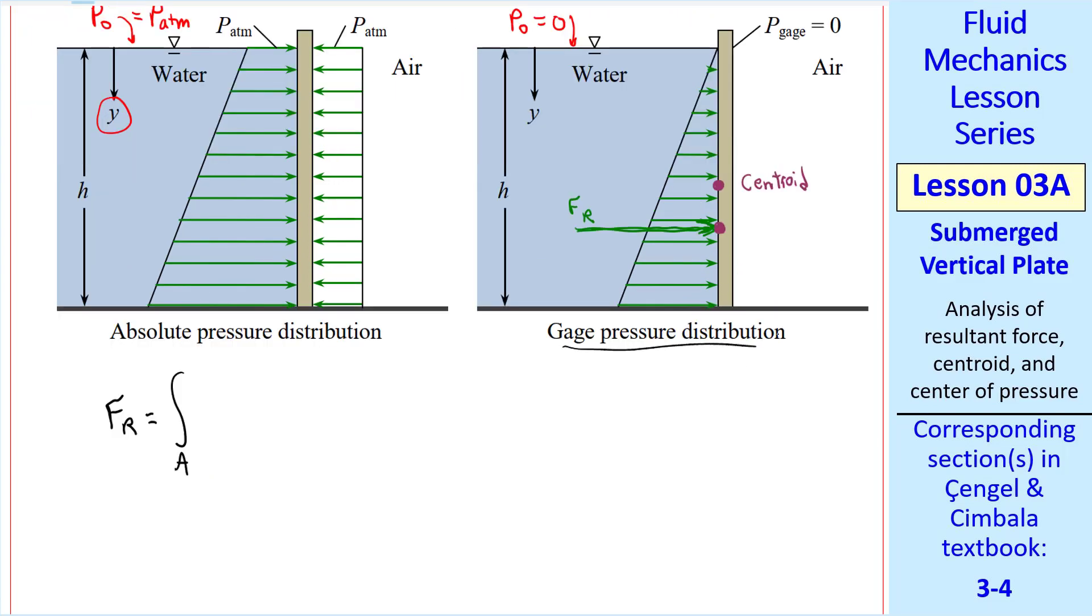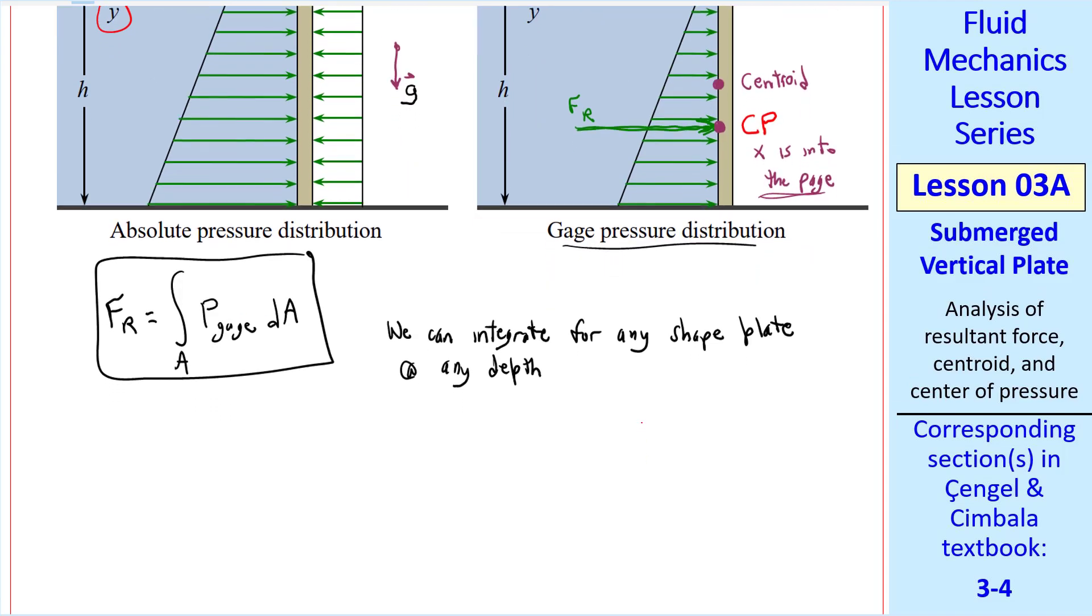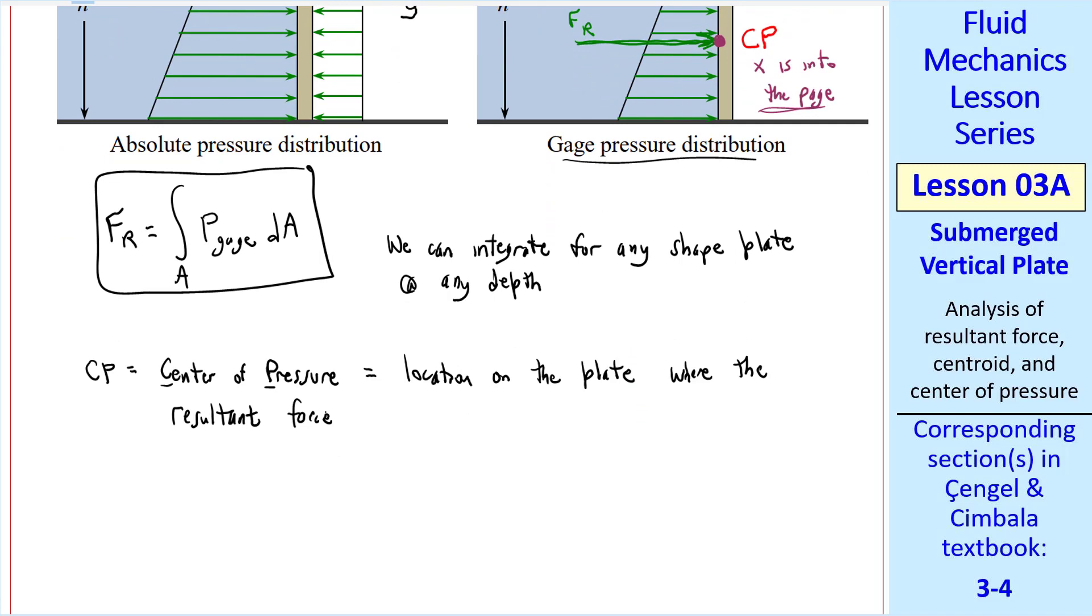Mathematically, using gauge pressure, the resultant force is the integral over the wetted portion of this plate, which we call A, of P gauge dA. We can integrate for any shape plate at any depth. You would just integrate P gauge, which varies with area on the plate, over this whole area. I also want to point out that we'll let the x-axis be into the page in these kinds of problems. This point where the resultant force acts, we'll call the center of pressure, or CP. CP is the center of pressure, which is the location on the plate where the resultant force acts. As we often do in MECH class, imagine replacing force distribution by a single resultant force. This force acts at the center of pressure.